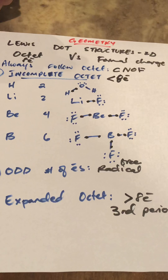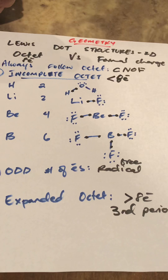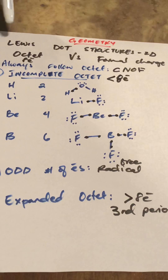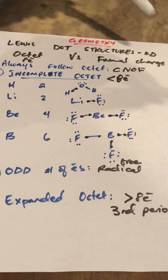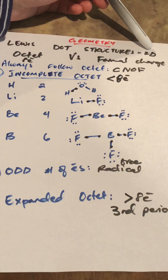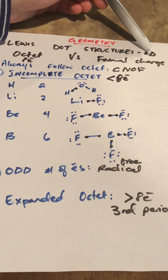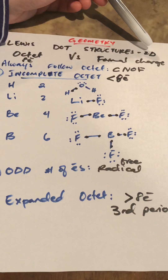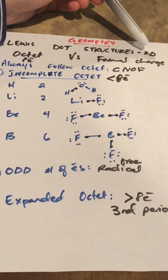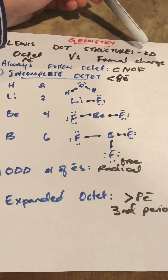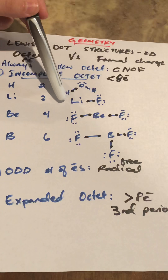This video covers the geometry lab and all related topics, starting with Lewis dot structures. Lewis dot structures are two-dimensional shaped structures that are usually drawn for molecular-type molecules and sometimes for ionic-type molecules.